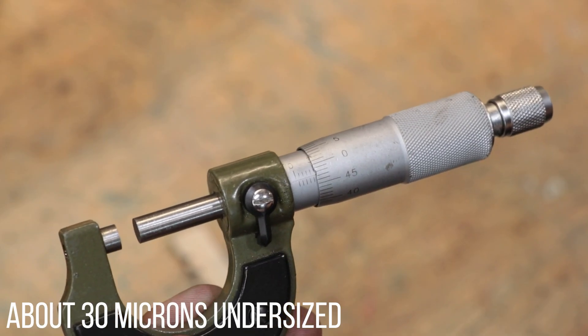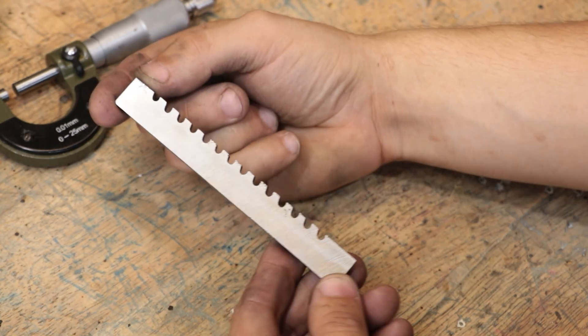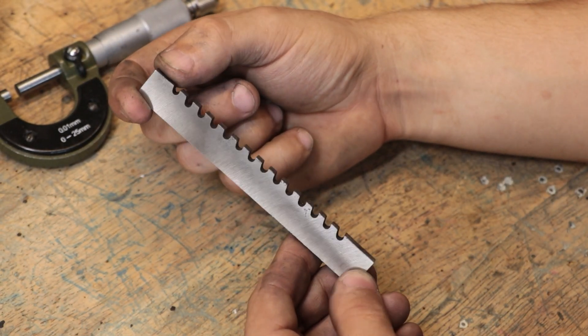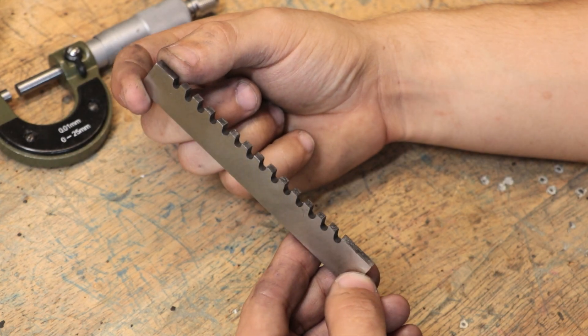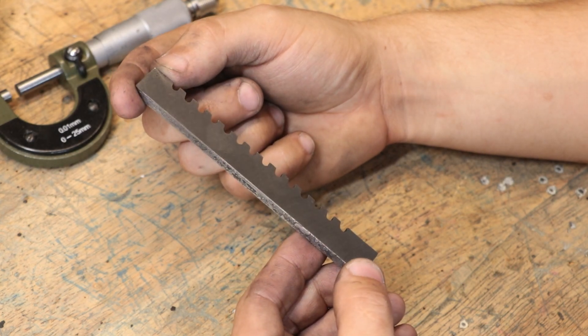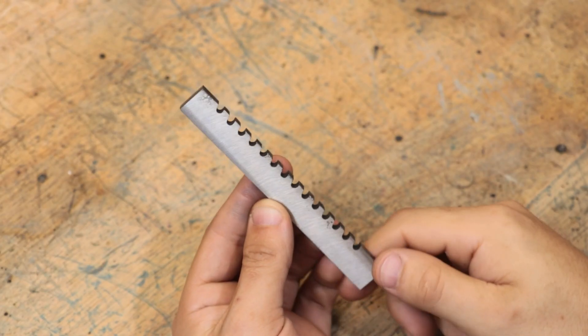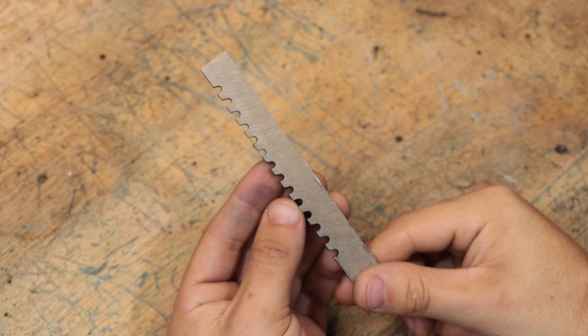Now whilst the part turned out great it did remove a little bit of material off the sides so I will need to grind the keys to match. Now normally you would leave some extra material to finish grind it into its final dimension but since I started off with 5mm steel I didn't exactly have any leeway to grind it so unfortunately that's on me. Apart from that though I'm pretty happy with how it turned out.